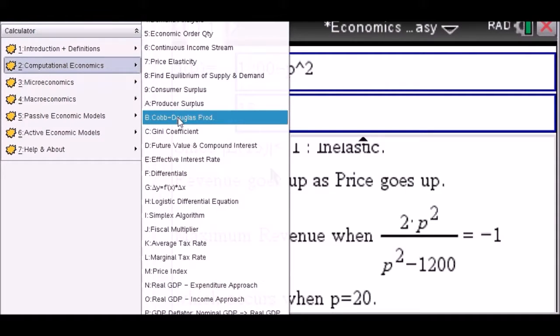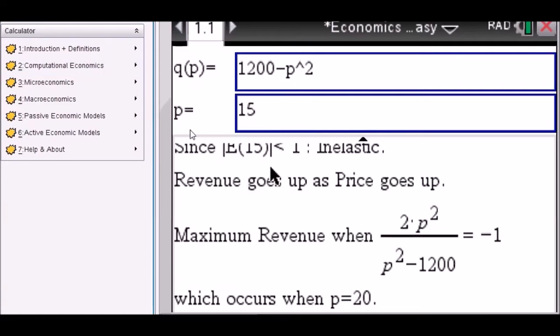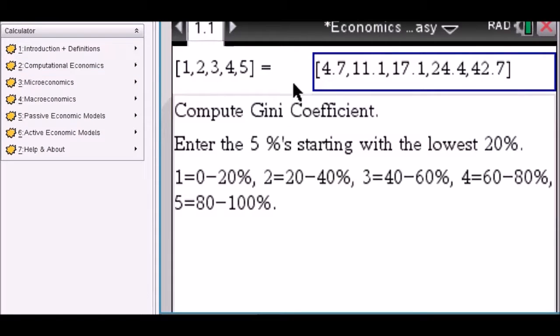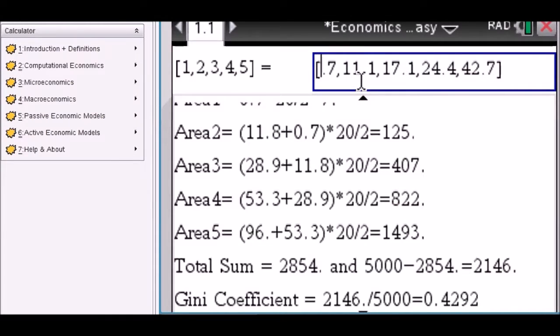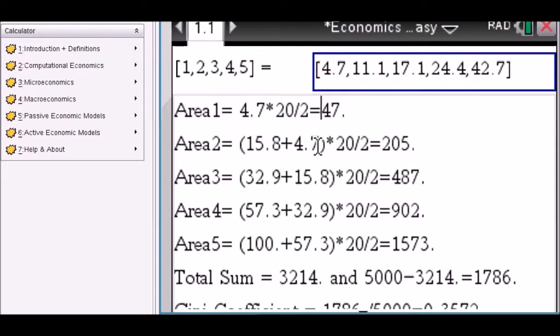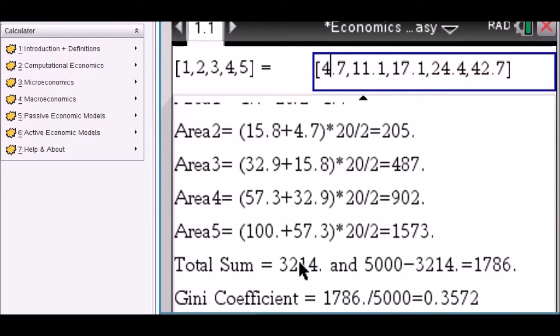Producer Surplus, Cobb-Douglas Production, Genie Coefficient. You enter the five values that represent each 20% range. You enter them here. And then you see that the five areas are being computed. You change it.